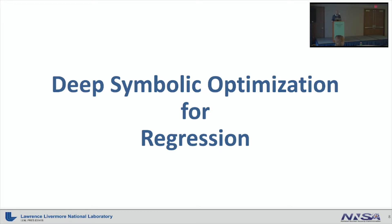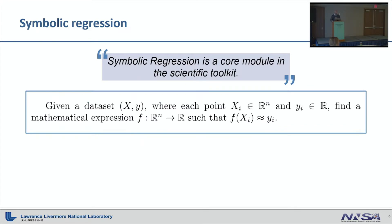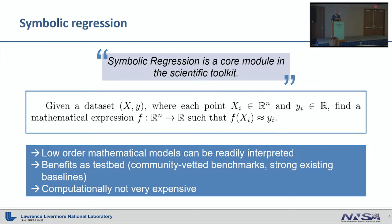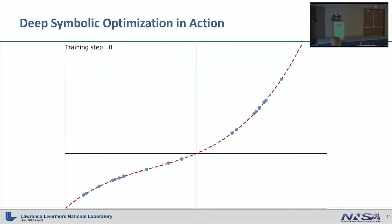Now let's look at some examples, starting with a regression problem. The goal of symbolic regression is simple: given a dataset of XY pairs, we want to find a tractable mathematical expression that fits the data well. Symbolic regression has a lot of benefits as a testbed — there are already many community-curated benchmarks and strong baselines available. Our framework produces low-order mathematical models that can be readily interpreted, and the reward calculation — in our case mean squared error — is computationally inexpensive.